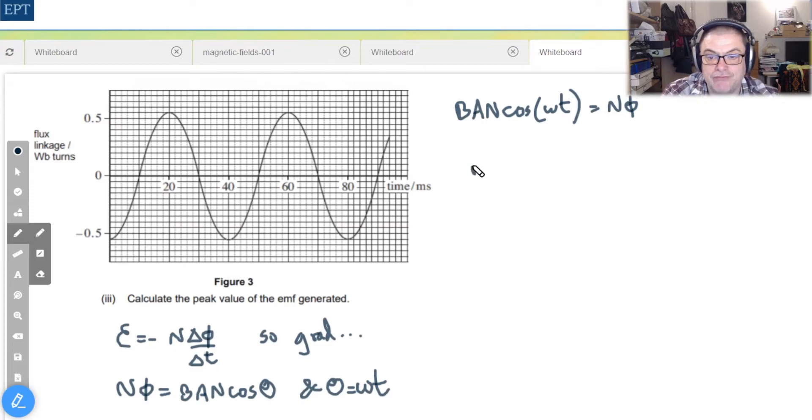What we have now then is a formula for N φ. What we need is one for the rate of change of N φ. In other words we just have to differentiate that expression. Now that's not really on the syllabus but if you know how to do that you will end up with B A N ω sine ωt and don't forget the negative out the front.